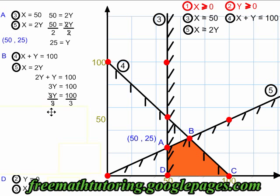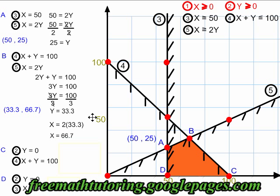If 3y equals 100, I can divide both sides by 3. The 3's on the left side cancel and my y is isolated. It's equal to 100 divided by 3, which is 33.3. Now, to find my x coordinate. If y is equal to 33.3 and x is equal to 2y, then x must be equal to 2 times 33.3. And that simplifies to x is equal to 66.7. I know my x, y coordinates of vertex B. They are 66.7 and 33.3. And I identify those on the graph.